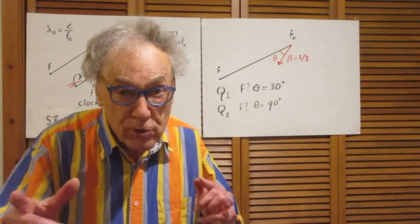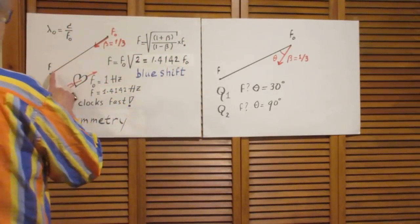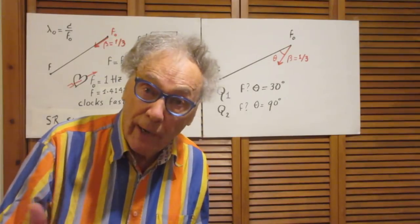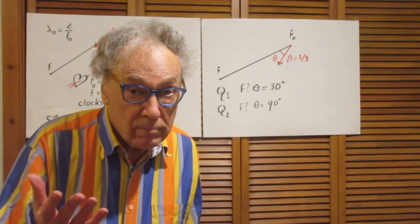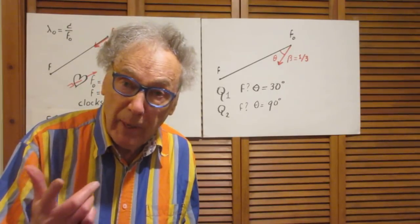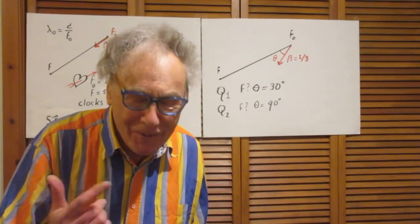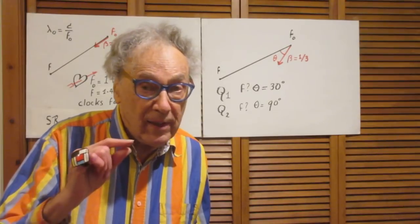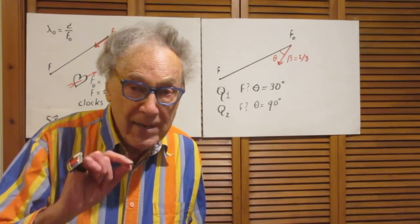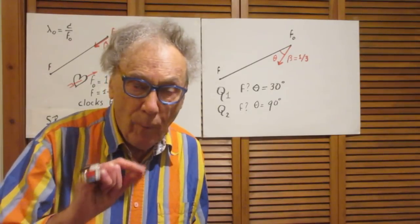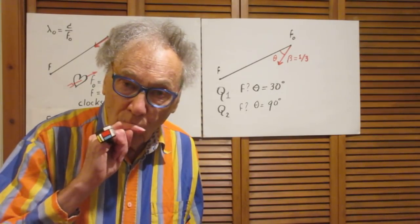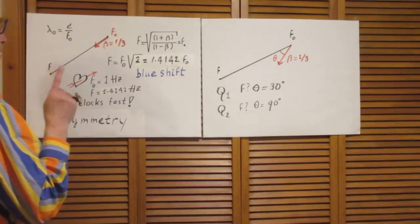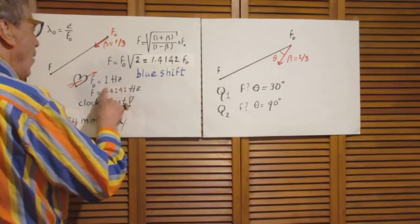Let's put ourselves now in Susan's position. Susan knows Walter quite well, and she knows that Walter's heartbeat is about 1 hertz — 60 beats per minute. Trust me, I measure it very often, so my heartbeat is 1 hertz. And it just so happens that every time my heart beats, I send a very brief radio pulse to Susan. What will she receive? She will receive that the frequency of my heart is 1.4142 hertz.